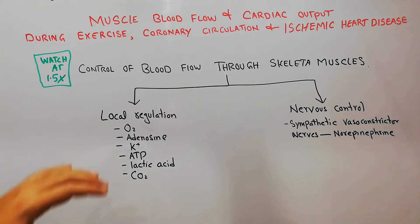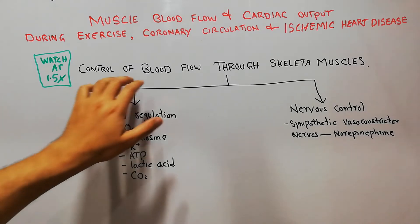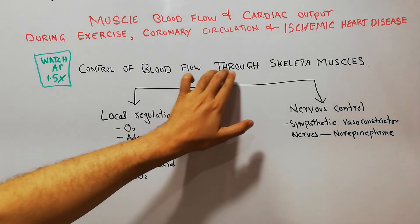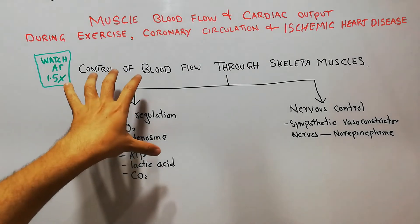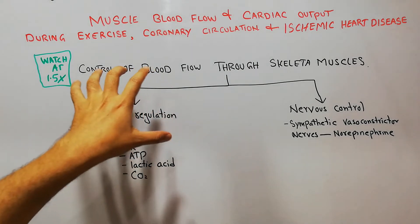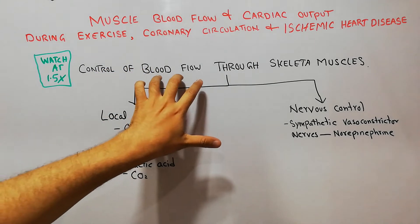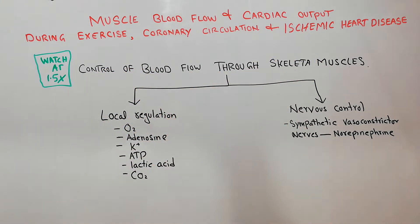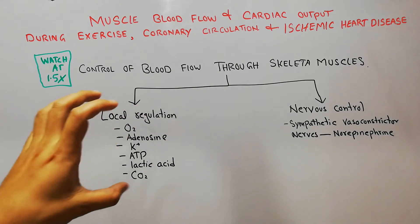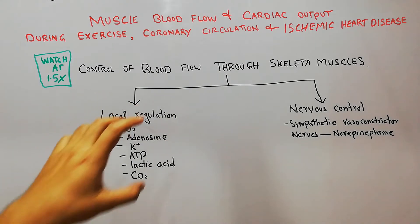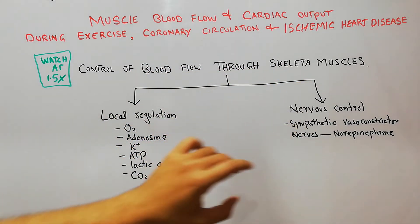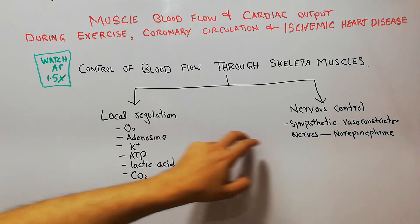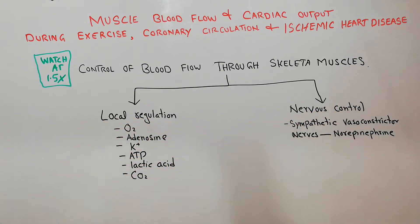Today in this lecture we are going to discuss the control of blood flow through the skeletal muscles. There are two main factors which influence the blood flow through the skeletal muscles: the local factors and the nervous system.